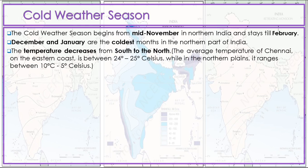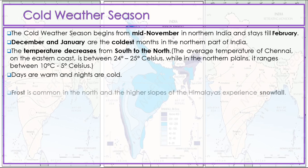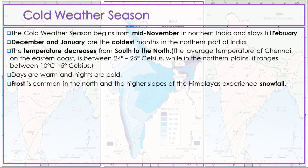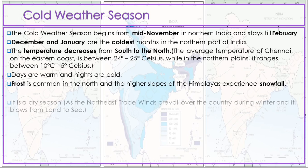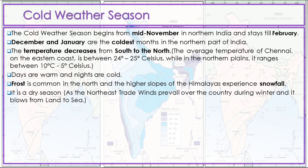The temperature decreases from south to north. The average temperature of Chennai on the eastern coast is between 24 to 25 degree Celsius, while in the northern plain it ranges between 10 to 15 degree Celsius. Days are warm and nights are cold. Frost is common in the north and the higher slopes of the Himalayas experience snowfall.